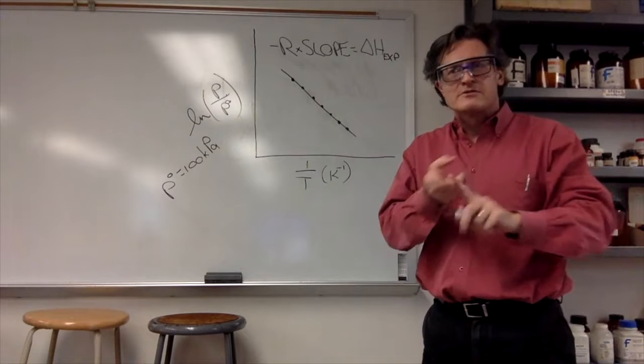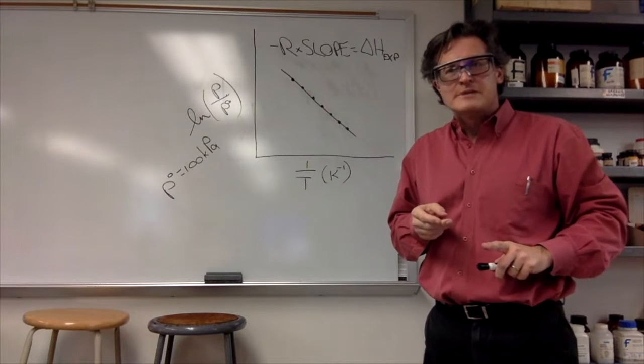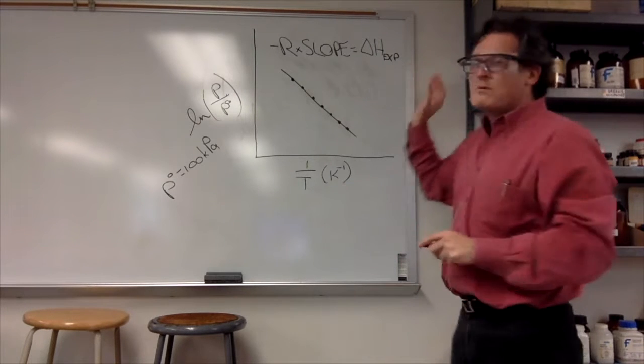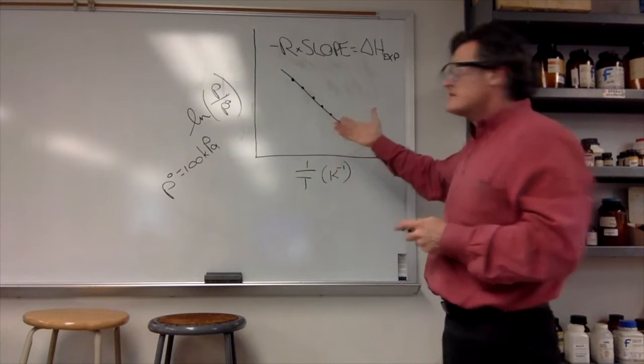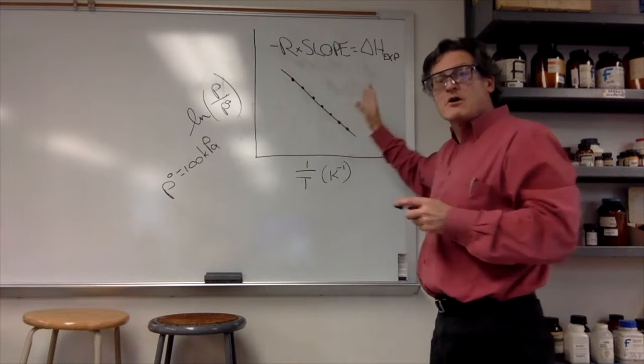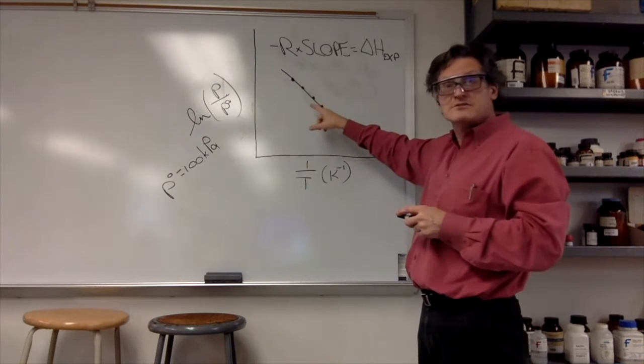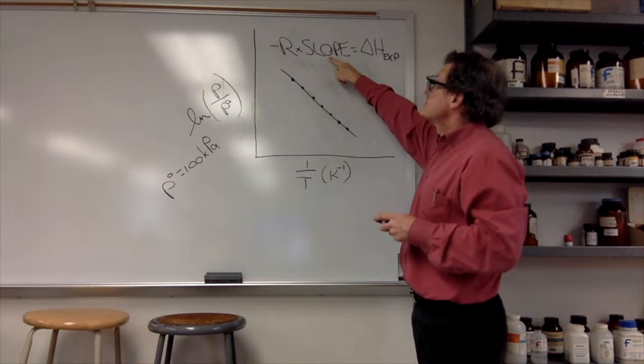You get one of those for ethanol, we get one of those for n-heptane. Now what we want to do, as always, is not only report that, we want to report the uncertainty.